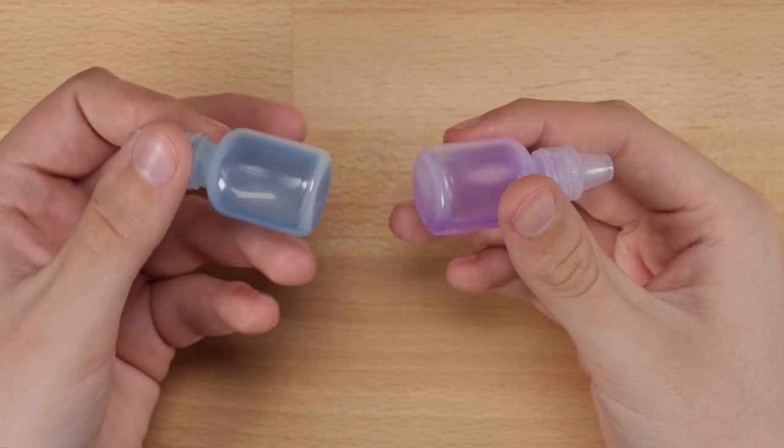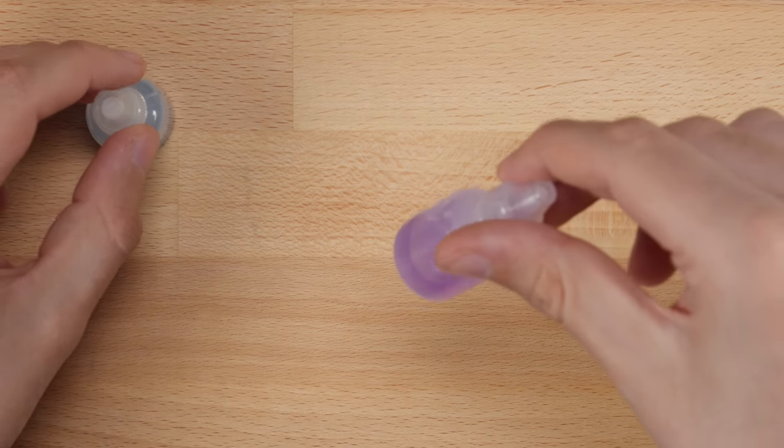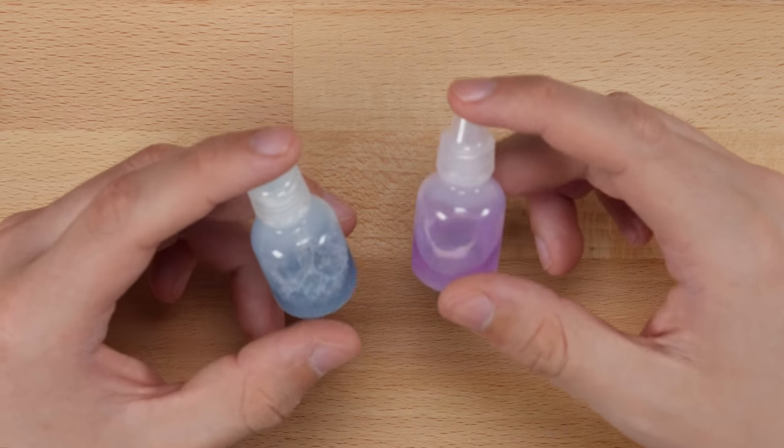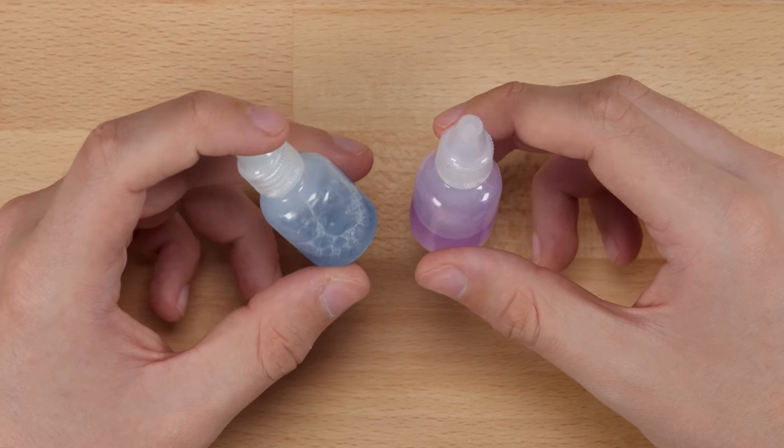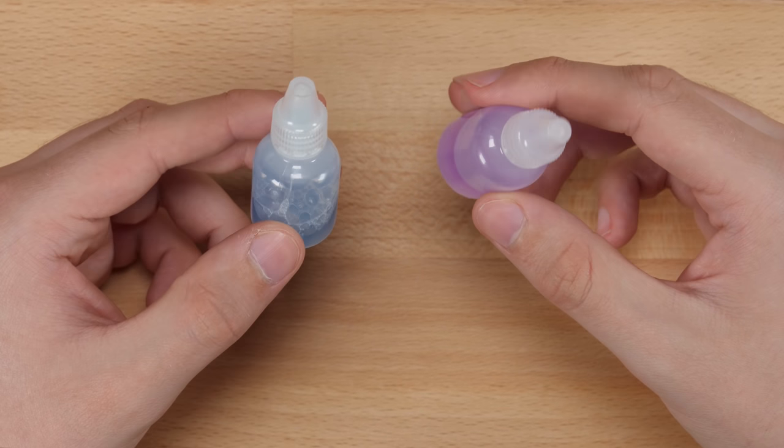So you can already kind of tell the difference in viscosity when you shake them around. This one shakes around a lot more and this one is quite a bit thicker when you try and shake it so it doesn't really work the same way. I've got a whole bunch of cubes that I want to try these in. Basically these are the two newest lubes from Angstrom Research.